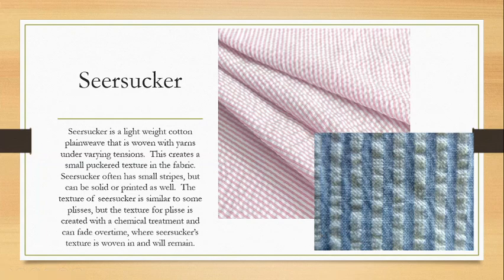Seersucker is a lightweight to medium weight plain weave where yarns are woven with varying tensions, creating a small pucker texture in the fabric. Seersucker often has small stripes but can be solid or printed as well. The pucker texture is similar to plissé; however, plissé is created with a chemical treatment and can fade over time, whereas seersucker's texture is woven in and will remain. It's used as a shirting fabric, for suits, and as a lightweight summer fabric.